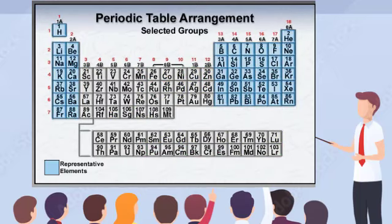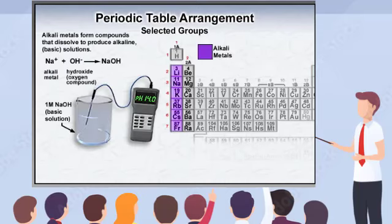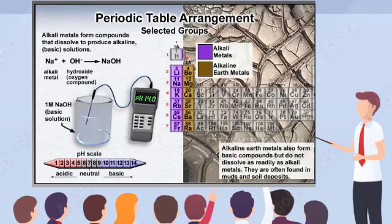Among the representative elements, the elements in group 1A at the left of the periodic table, excluding hydrogen, are known as the alkali metals. These elements tend to form oxygen-containing compounds that dissolve in water to produce solutions that are strongly alkaline, or basic, on the pH scale. The group 2A elements are also metals that form alkaline oxygen compounds. However, these elements do not dissolve in water as readily as the group 1A elements. Consequently, they are often found in earthy soil deposits and are called the alkaline earth metals.